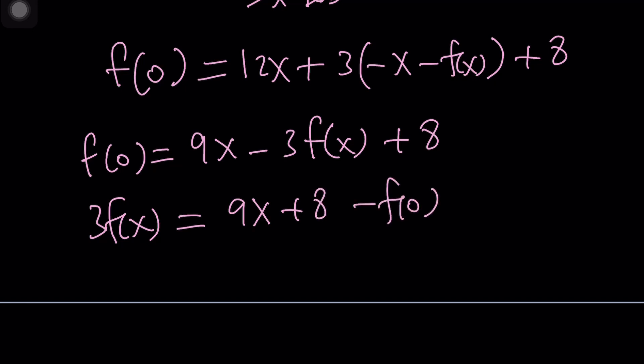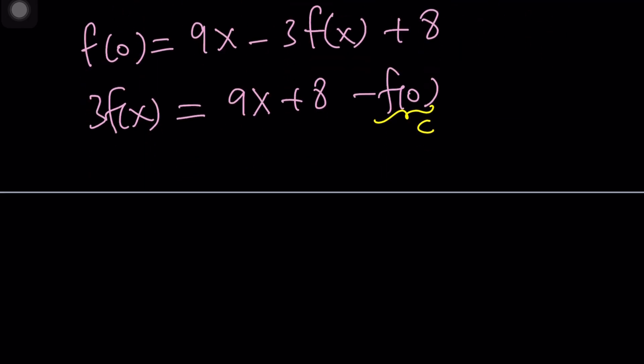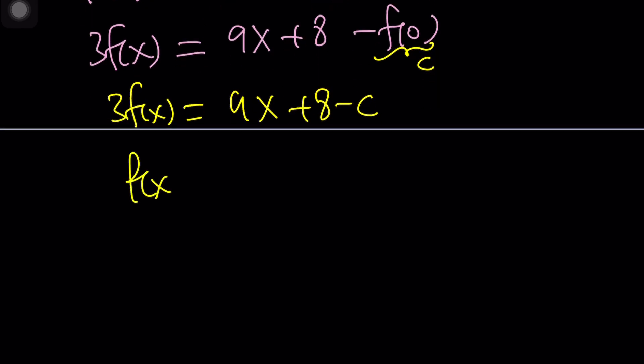This gives me 9x plus 8 minus f of 0. Remember, f of 0 is a constant, and I can even replace it with c. And that gives me 3 f of x equals 9x plus 8 minus c. c is a constant. 8 is a constant. 8 minus c is a constant. Make sense?